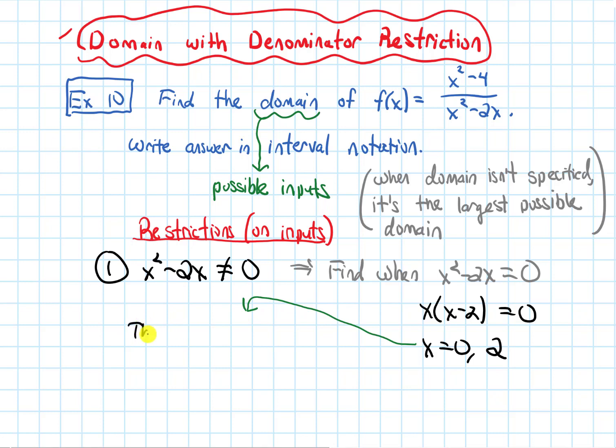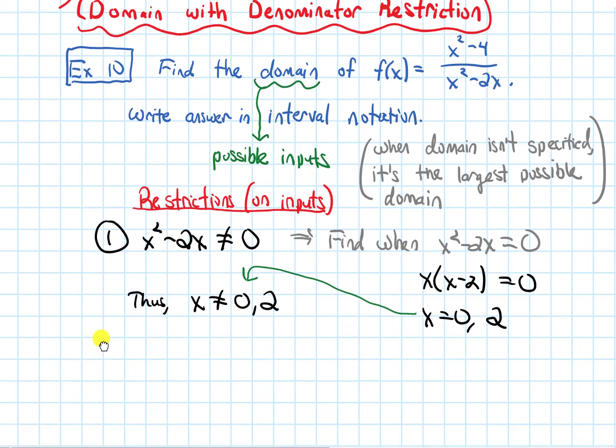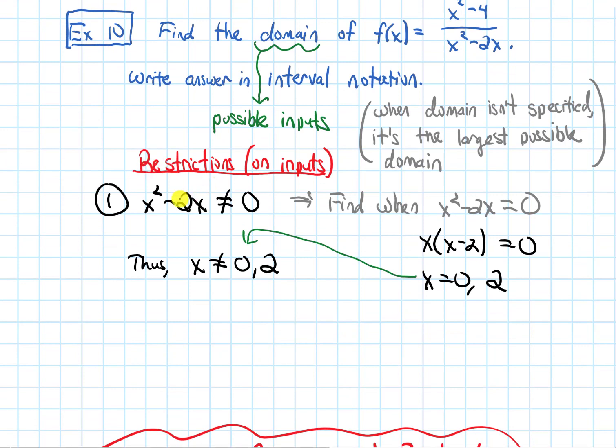Because of that, x is not going to be allowed to be equal to either 0 or 2. Because if that could happen, plugging them in would make my fraction undefined, because the bottom would be 0. In terms of this restriction, it just tells us x can't be 0 and x can't be 2.